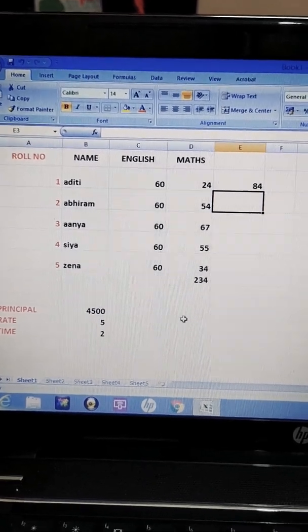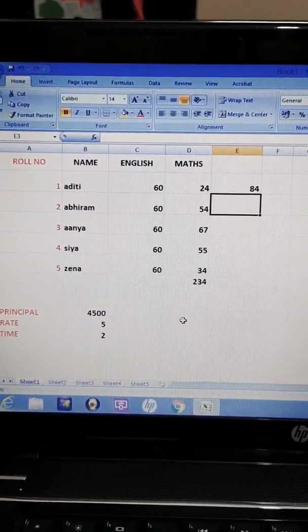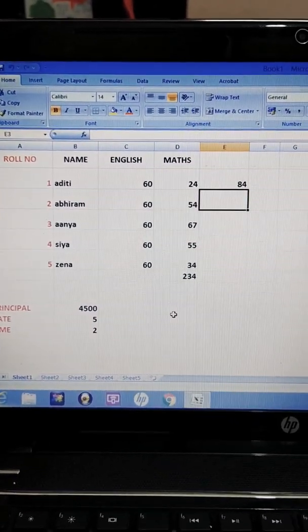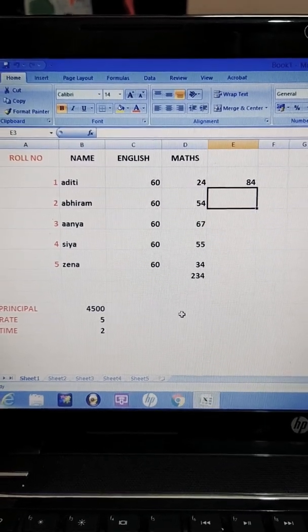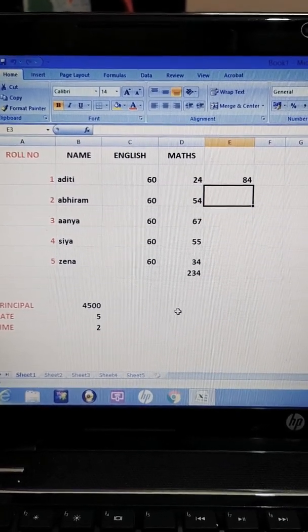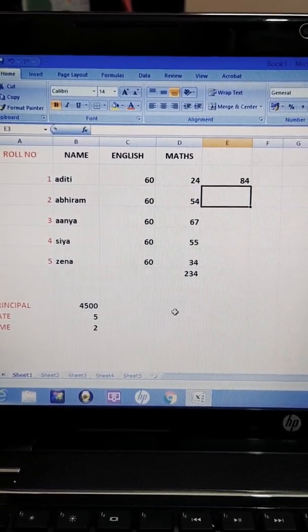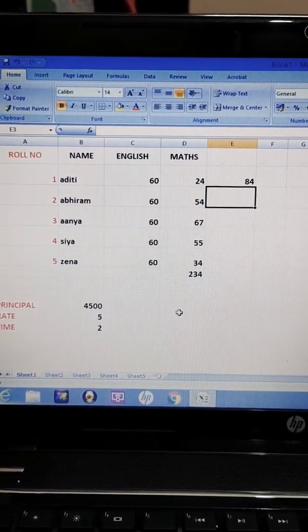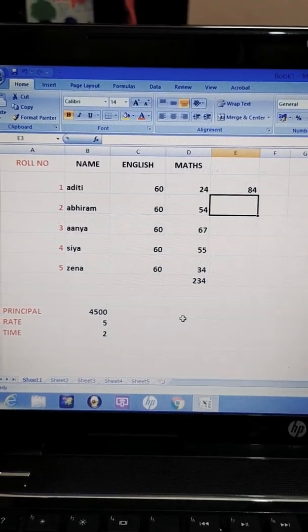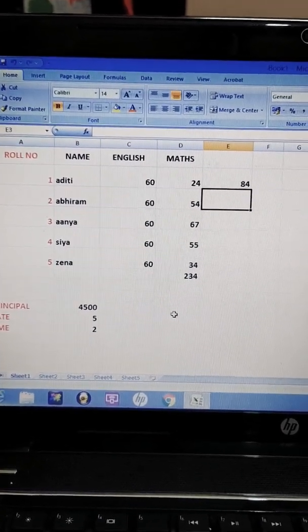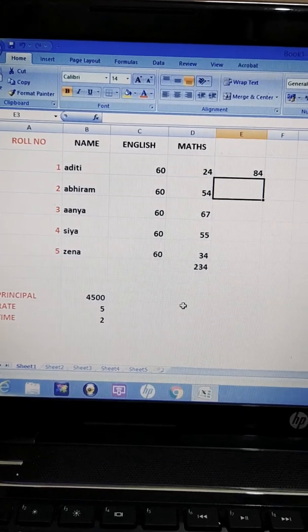So this is basic formula. I can write A2 plus B2 plus C2 plus D2. I can use number of cell addresses but everywhere I am using only one operator, that is addition, that is plus sign. So that is basic formula when I use only single operator. But when I include more than one type of operator, that becomes compound formula.